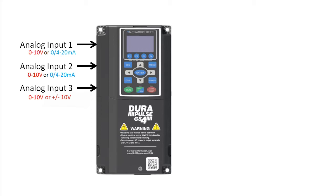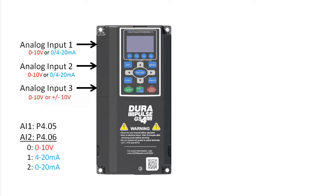When analog inputs 1 or 2 are switched to current mode, these parameters allow you to switch between 0 to 20 milliamps and 4 to 20 milliamps.